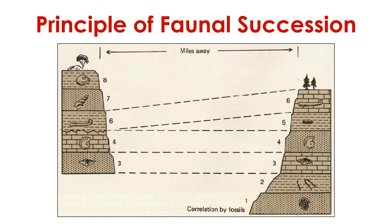A final principle worth pointing out is called the principle of faunal succession. Faunal refers to fossils of animals. According to this principle, the oldest fossils occur below the youngest fossils in a sequence of strata. This idea makes a lot of sense given the principle of superposition, which tells us that older strata occur below younger strata, and the principle of included fragments indicates that the fossils must be older than the strata themselves. Altogether, these principles support one view of geology. These principles provide the tools to look at the rocks in a place and determine the order in which they formed.